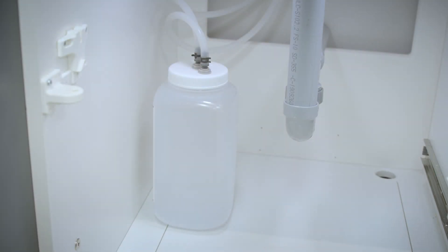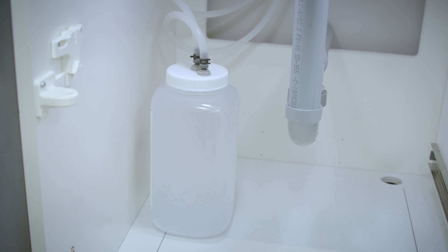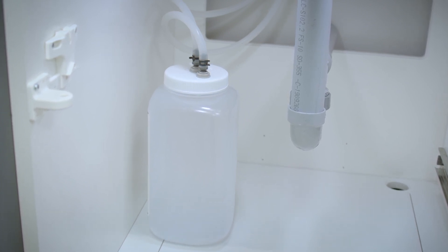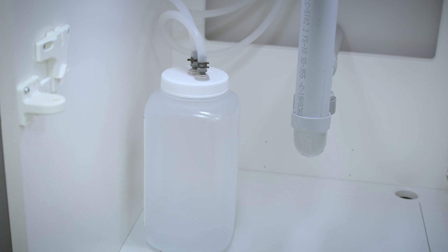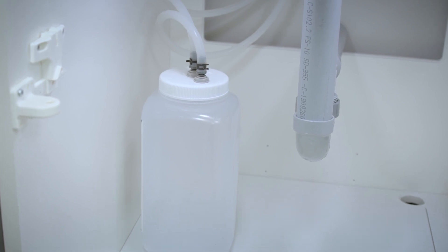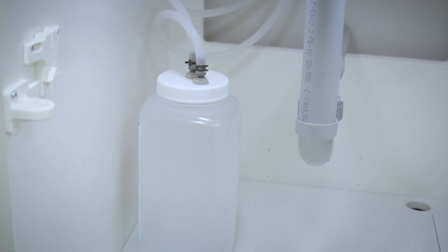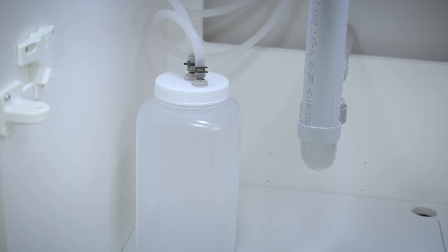The second drainage option is to use a waste bottle. Remember to carefully monitor the waste bottle to avoid overflow. The best practice is to empty the bottle every time you refill the water reservoir. When setting up the filling and drainage tubing, it is important to make sure the drainage tubes are not bent, crushed, or obstructed in any way.